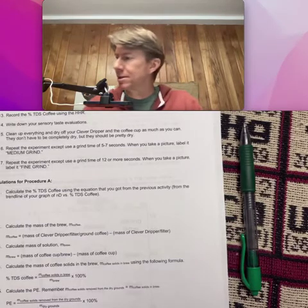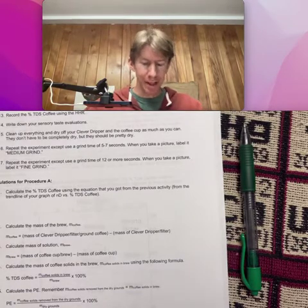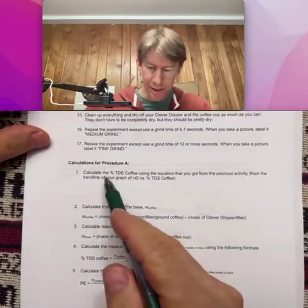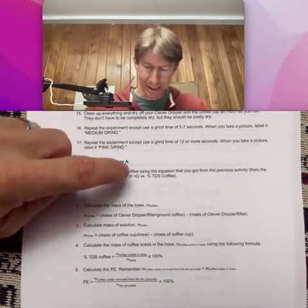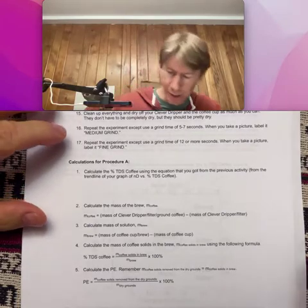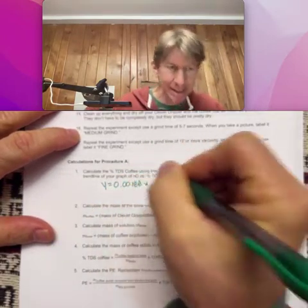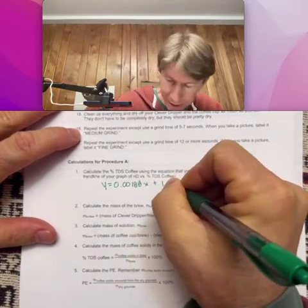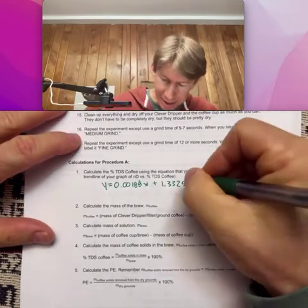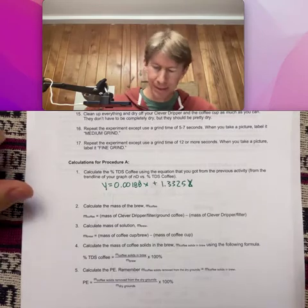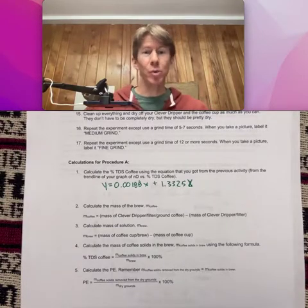The other two, the medium and the fine, I'm going to let you handle those. I'm going to go ahead and get to the calculations now. The calculations I'm showing right here, the first one is calculate the percent TDS coffee using the equation that you got from the previous activity, and that's from the trend line of your graph of refractive index N sub D, although my D needs to be subbed versus percent TDS coffee.